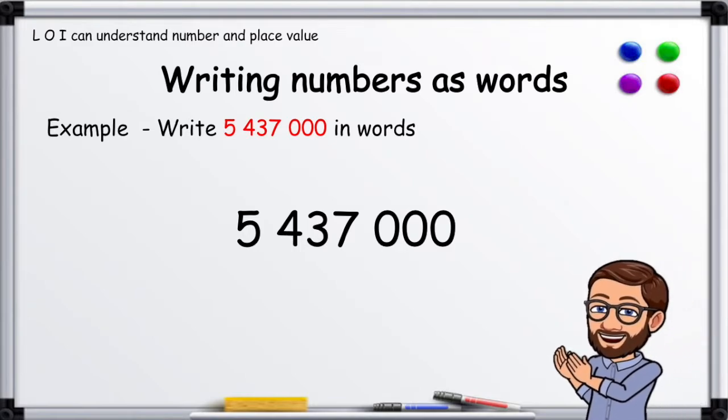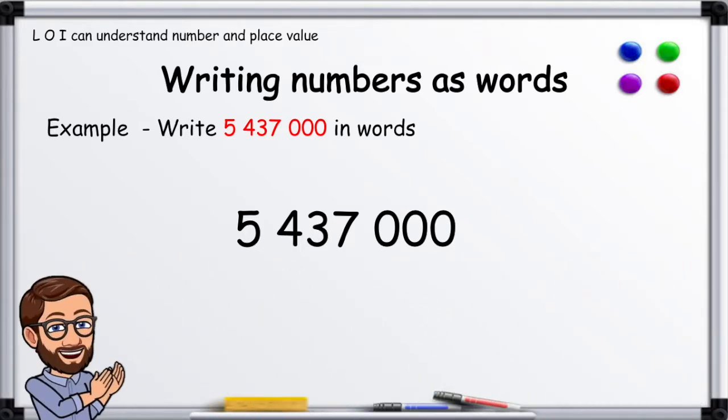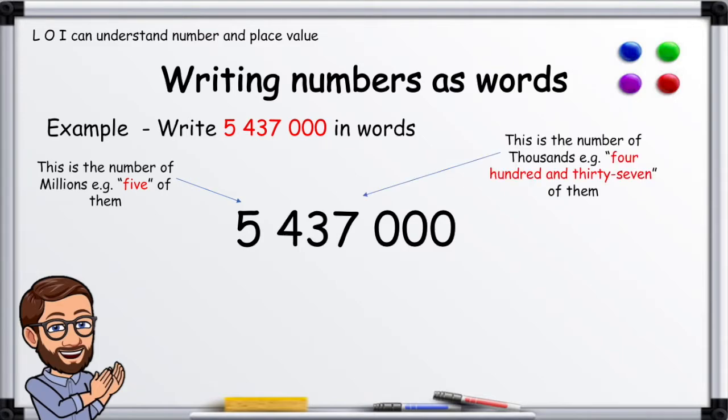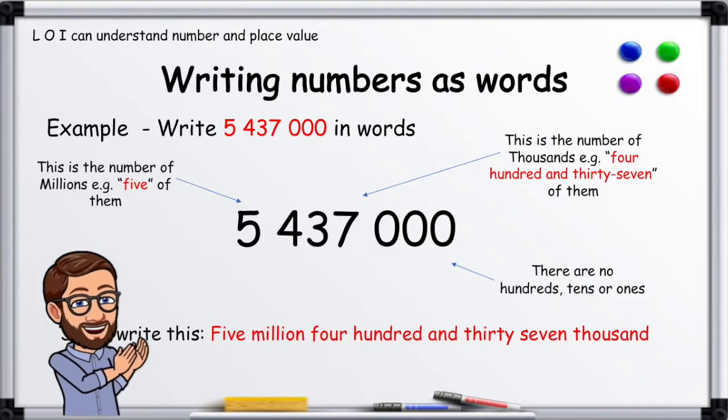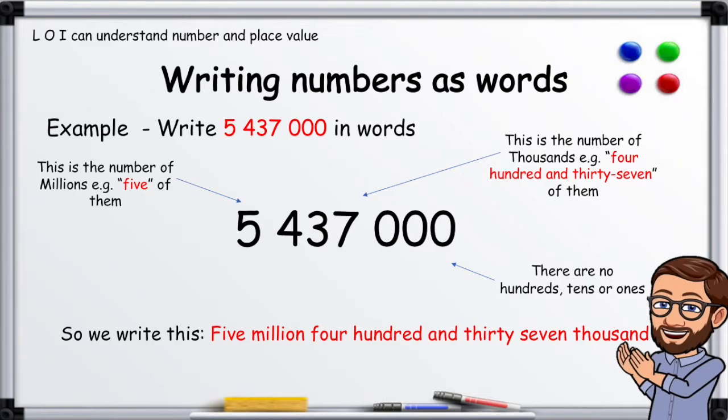Example: Write 5,437,000 in words. This is the number of millions. There are five of them. This is the number of thousands. Four hundred and thirty-seven of them. There are no hundreds, tens, or ones. So we write this: five million four hundred and thirty-seven thousand.